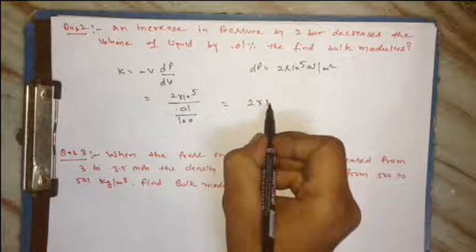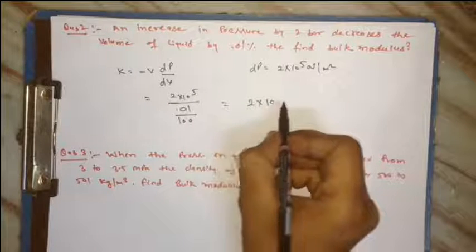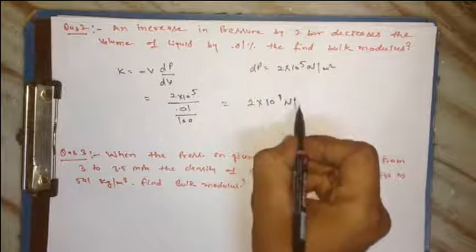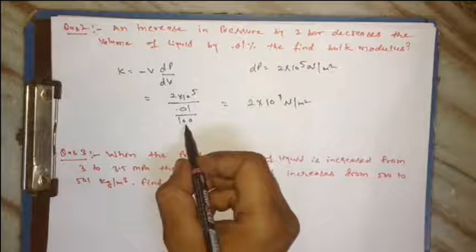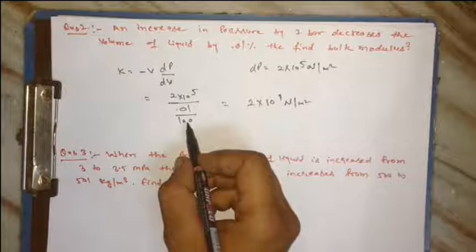2 into 10 raise to power 9 newton per meter square. 10 raise to power 100 niche hai 10 raise to power 2.